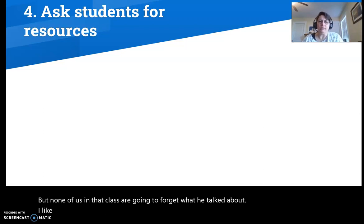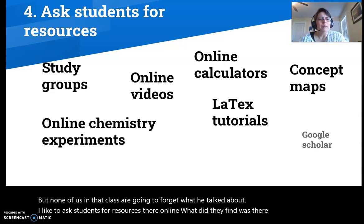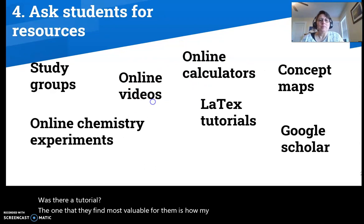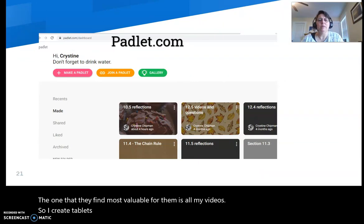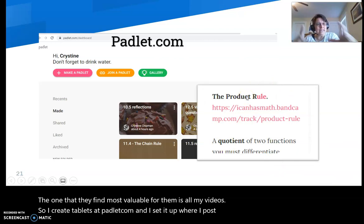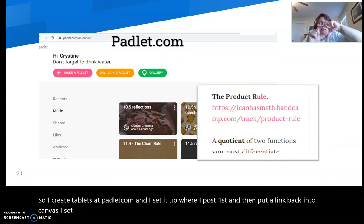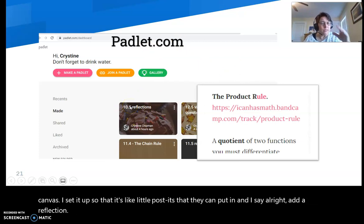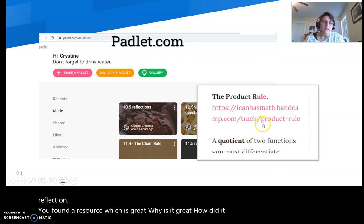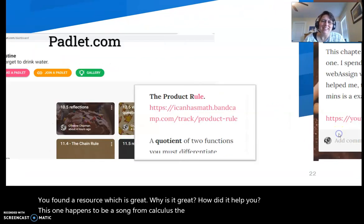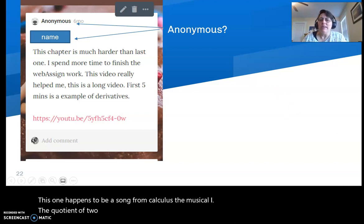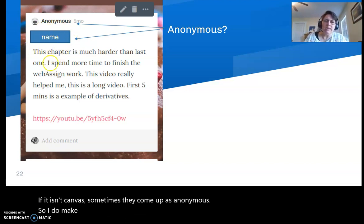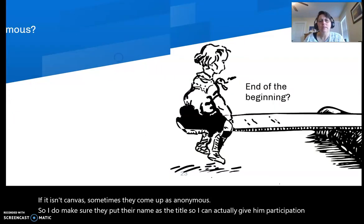I like to ask students for resources. They're online. What did they find? Was there a study group? Was there a tutorial? The one that they find most valuable for them is online videos. So I create Padlets at Padlet.com and I set it up where I post first and then put a link back into Canvas. I set it up so that it's like little post-its that they can put in, and I say, alright, add a reflection. You found a resource, which is great. Why is it great? How did it help you? This one happens to be a song from Calculus the Musical. A quotient of two functions. If it is in Canvas, sometimes they come up as anonymous. So I do make sure they put their name as the title so I can actually give them a participation grade.